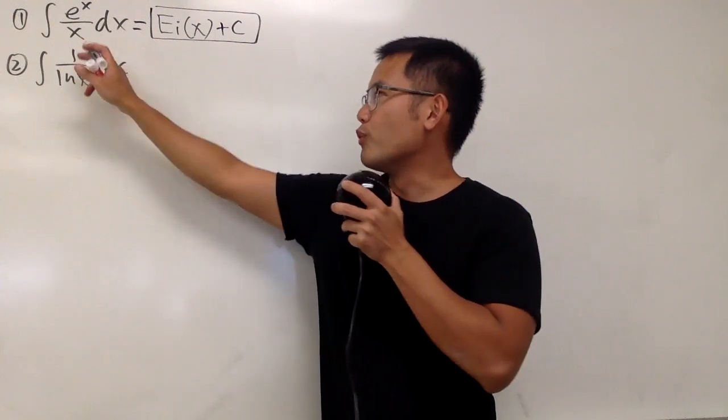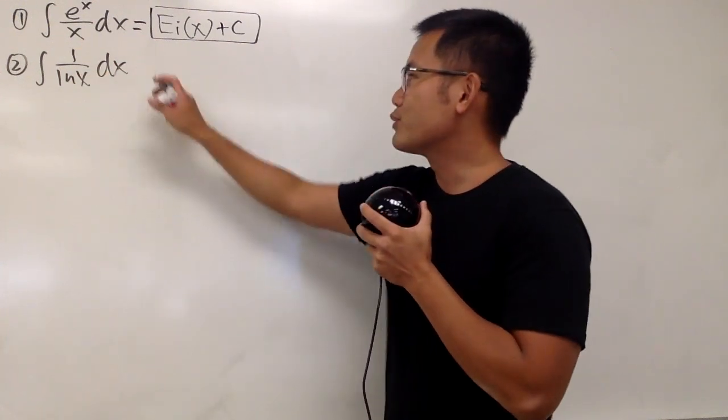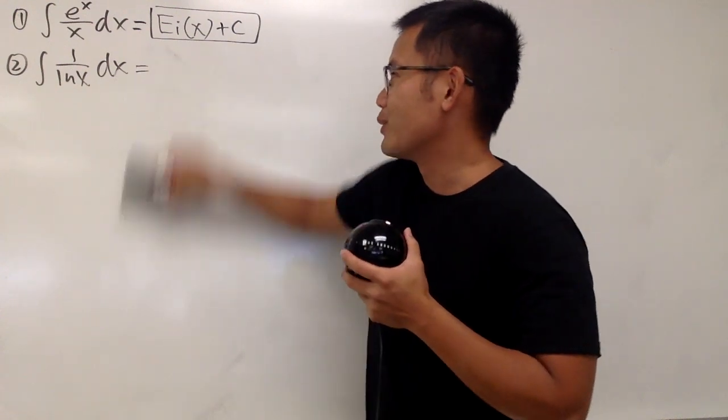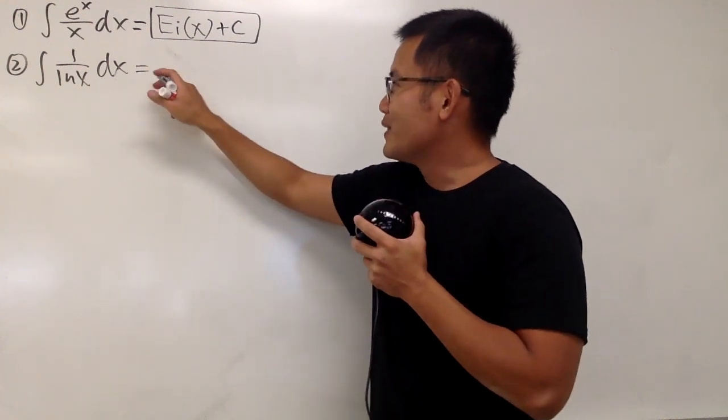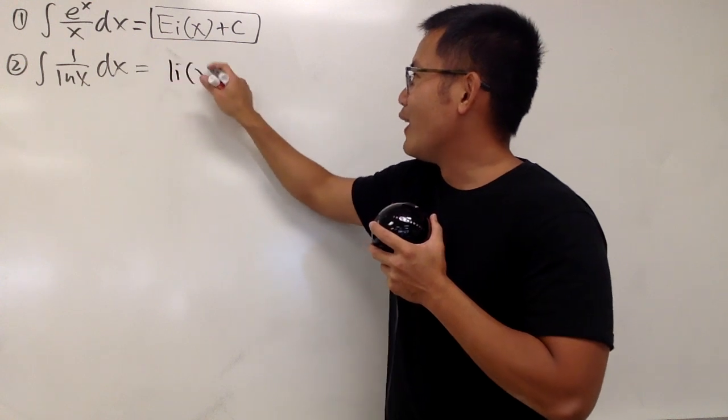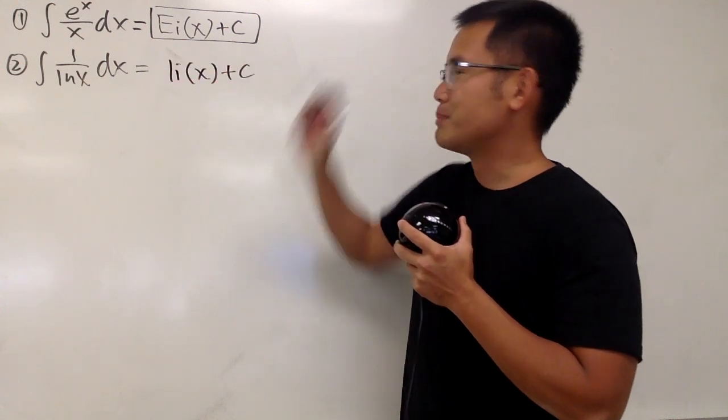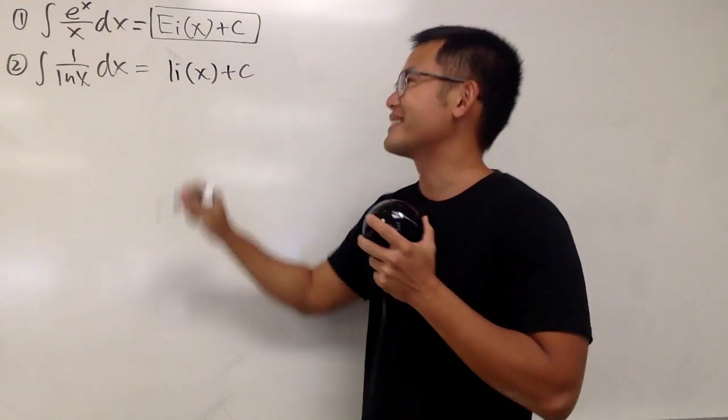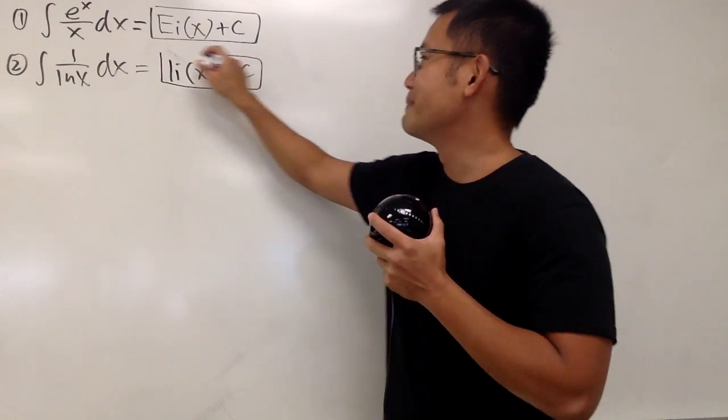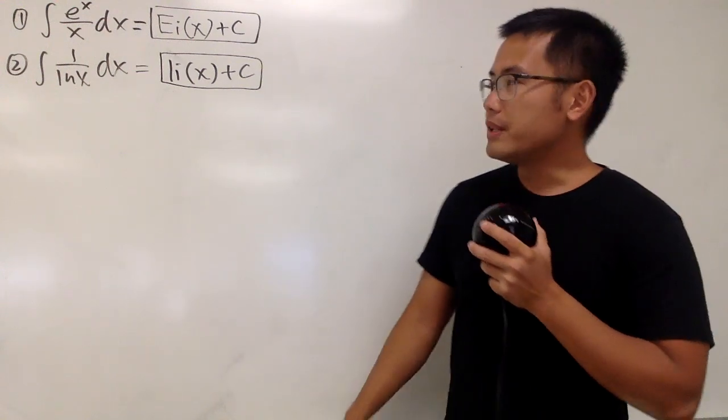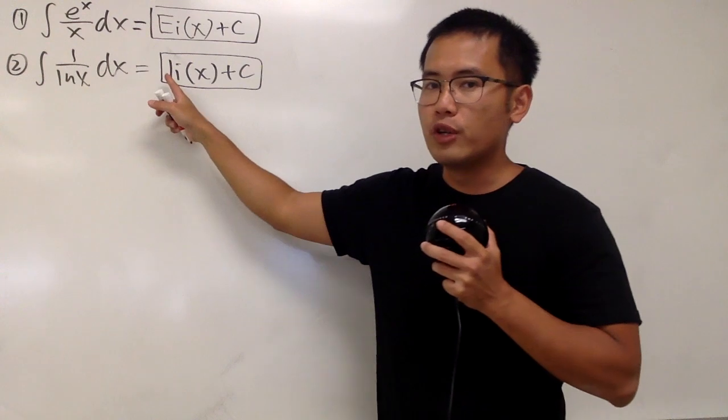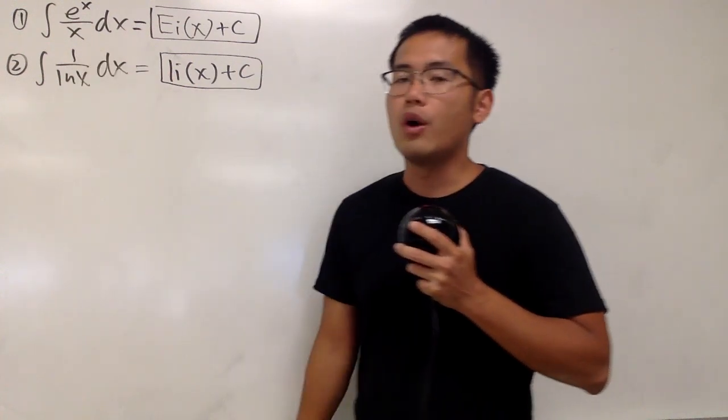And now for the second one, the integral of 1 over ln(x). This right here, we'll just answer it as li(x), and of course, put on plus C. This right here is the logarithmic integral function and the input right here is x. And that's it. Well, the deal is that if you differentiate this, you end up with e^x over x. And if you differentiate that, you end up with 1 over ln(x).